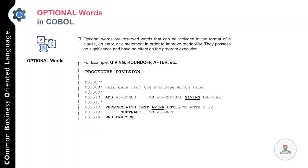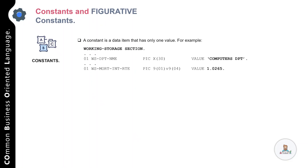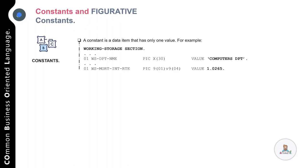Now let's talk about constants and figurative constants in COBOL. A constant is a data item that has only one value throughout the execution of the program. For example, you might define a variable DEPARTMENT-NAME with an initial value of 'Computers Department' and MORTGAGE-INTEREST-RATE with a value of 1.0265 in the working storage section using the VALUE clause. Throughout the program, these variables are used wherever their values are needed in the business logic.